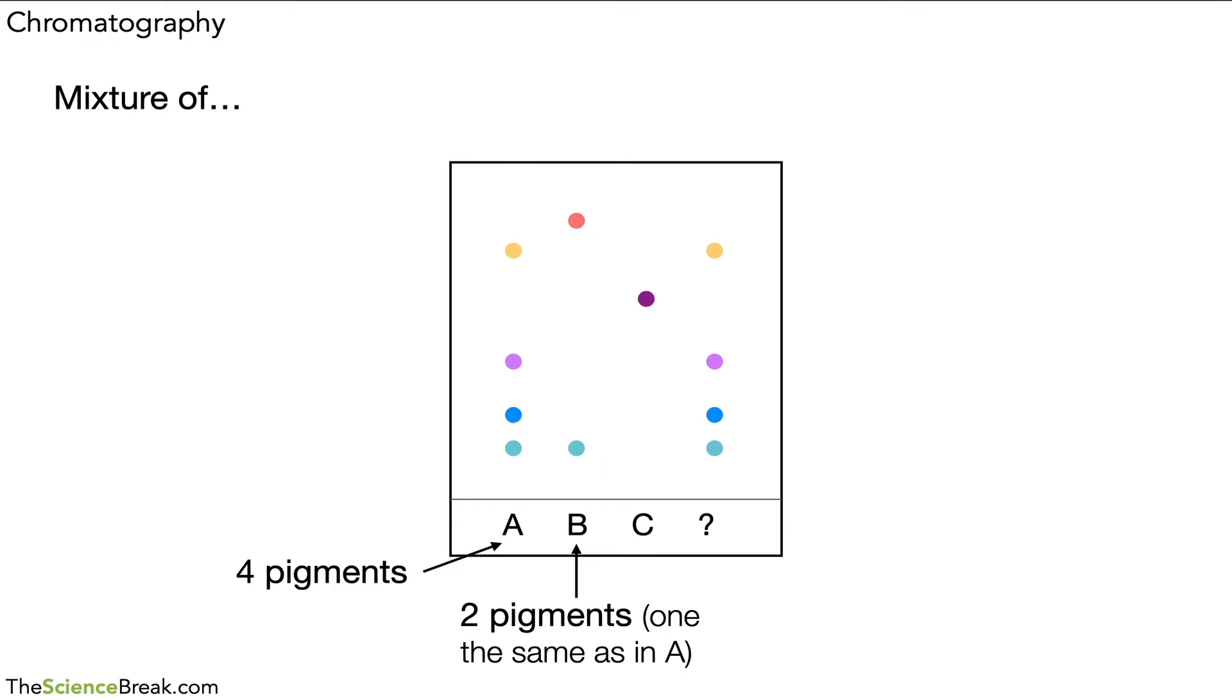This tells us that C is a pure ink. Pure meaning it's made of one substance only—something we looked at in a previous video. Pigment C is pure because it's made of just one substance.